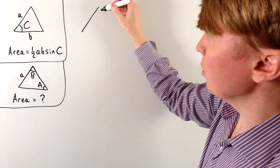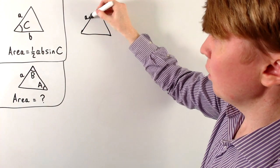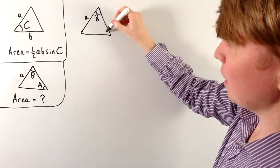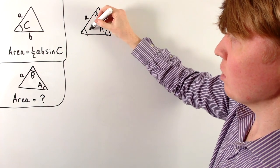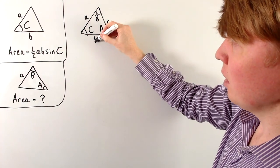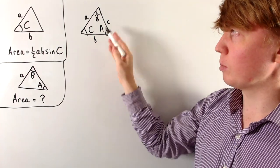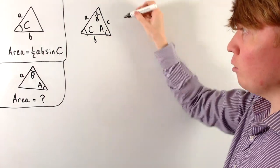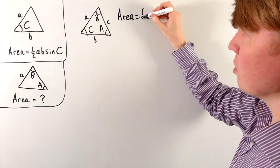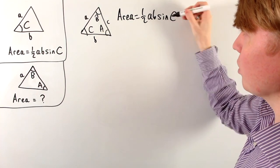If we draw this out and add some more labels, we've got lowercase letters representing side lengths and capital letters representing angles. So this will be capital C here, lowercase c here, and lowercase b for the side length at the bottom, opposite B. The area is just a half AB sine C, and we're going to use this as our starting point.